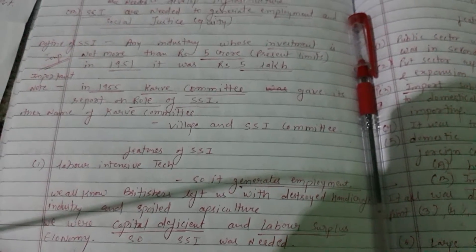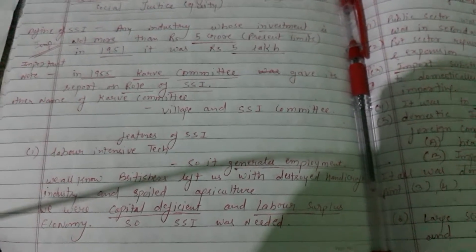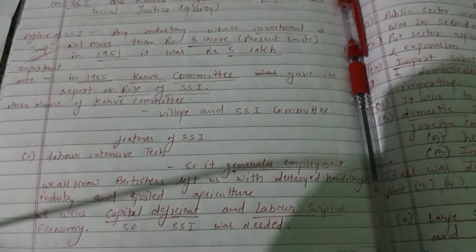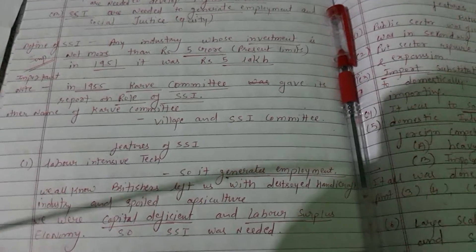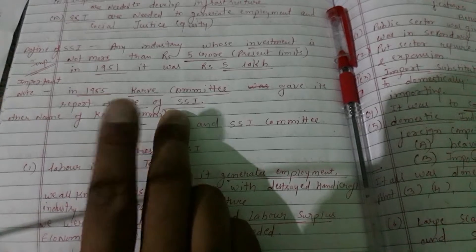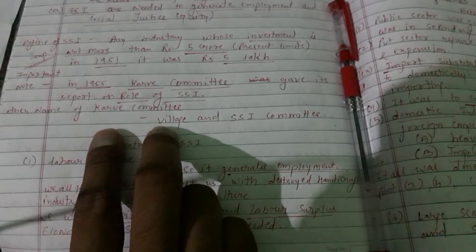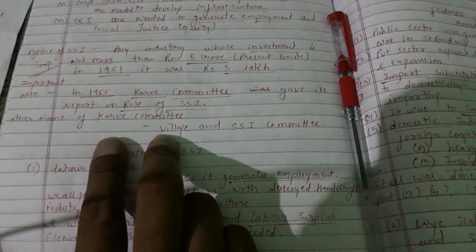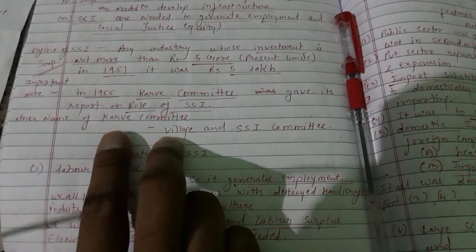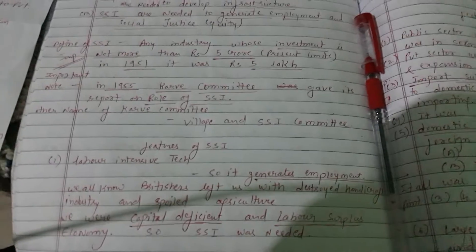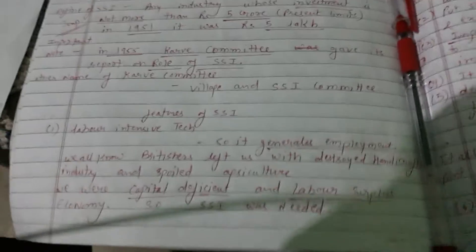In 1955, there was a committee named the Karve Committee — its other name was the Village and Small Scale Industry Committee. It presented a report, and the main focus of that report was: what is the role of SSI in the development of India? The Karve Committee, formed for village and small scale industries, presented its report in 1955 with a focus on the role SSI can play in India's development.